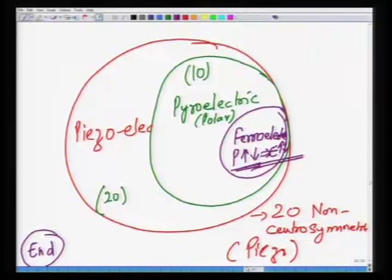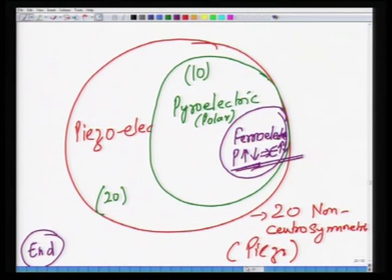In today's class, we will first have a look at what we did last time and then start with the new topic. In the last class, we started module 5 on non-linear dielectrics. These are materials which are different from linear dielectrics in the sense that the behavior of dielectric constant and polarization as a function of electric field is not linear.